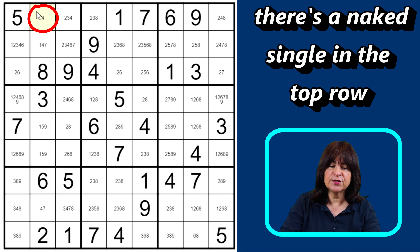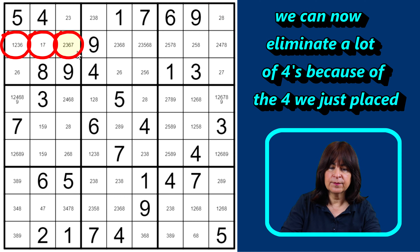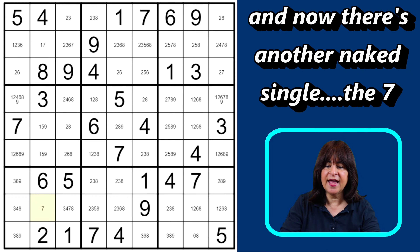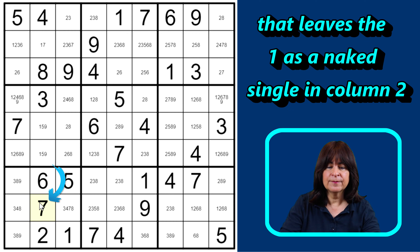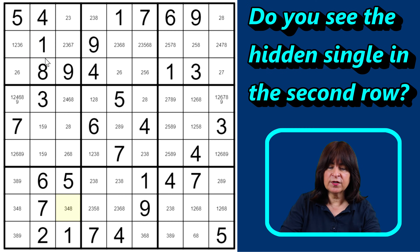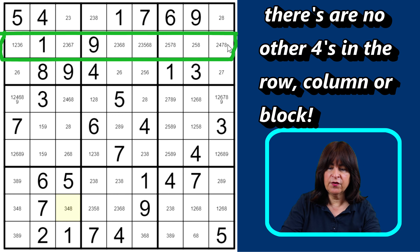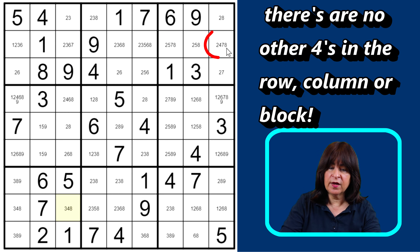Right away we can see that there's a naked single here — the four — and then that eliminates these two fours, and these fours, and also the four down here. So that leaves me with another naked single, and this cell becomes a seven. And now we have another naked single here, the one. So let me get rid of this seven. Now looking across that row, I can spot a hidden single — the four. There are no other fours in the row, or the column, or even the block, so this cell has to be a four.